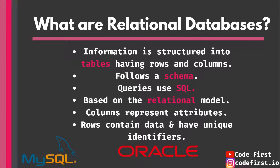The traditional databases are relational databases. Relational databases are basically tables having rows and columns. They follow a certain schema, meaning the data has to be structured in the way the schema decided in order to be inserted into the database. They use SQL for queries, so if we ever want to retrieve data, we need to write syntactic SQL queries. They're based on the relational model, meaning the tables in the relational database have different relationships.